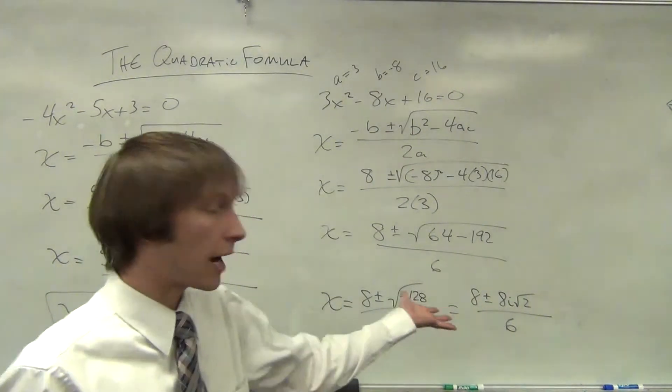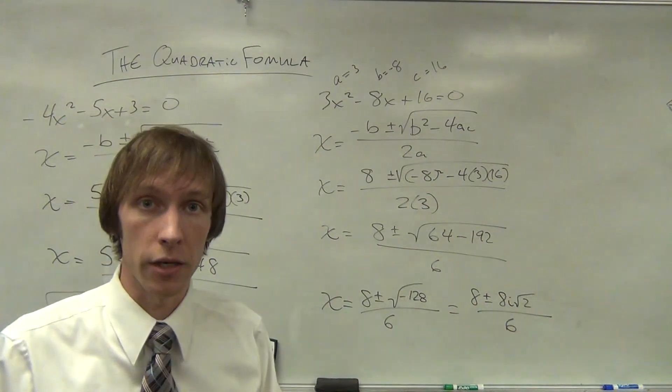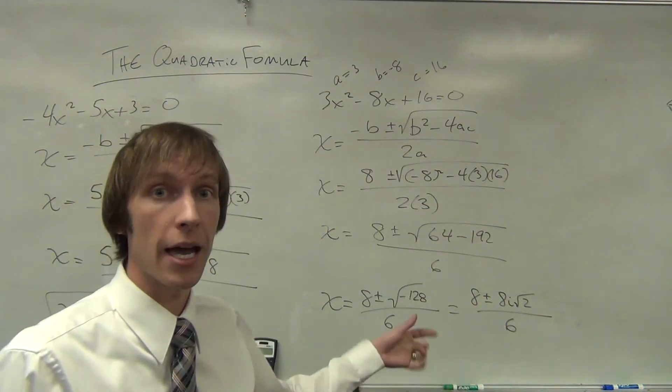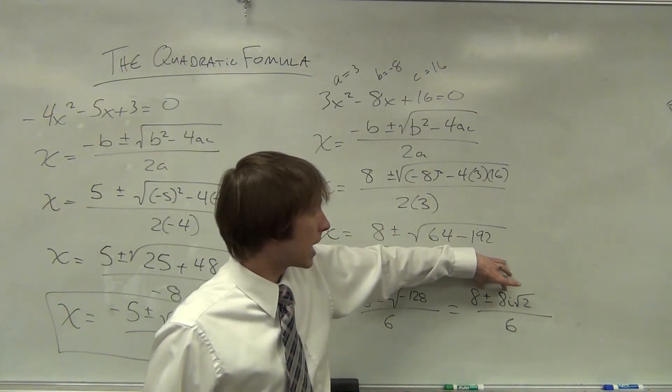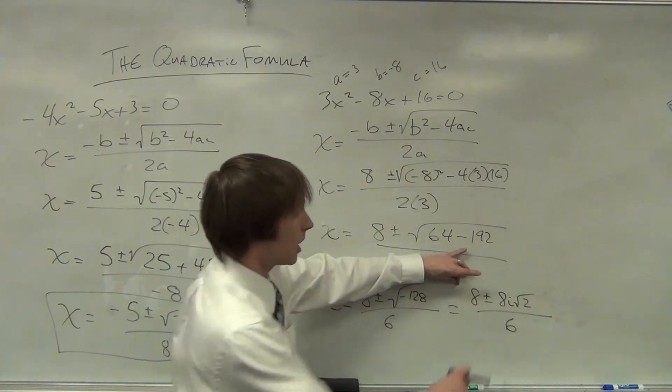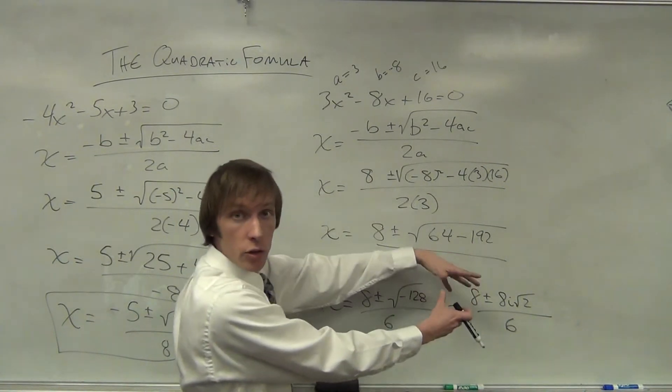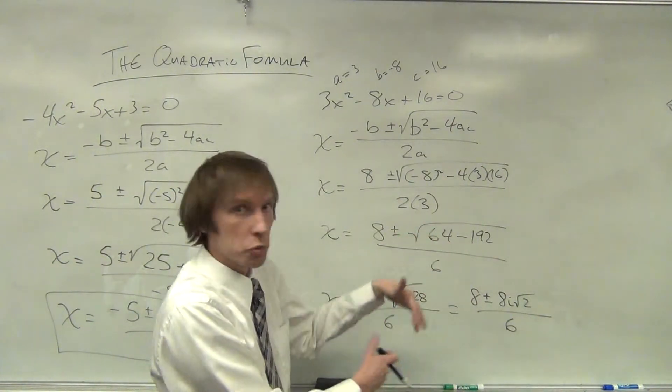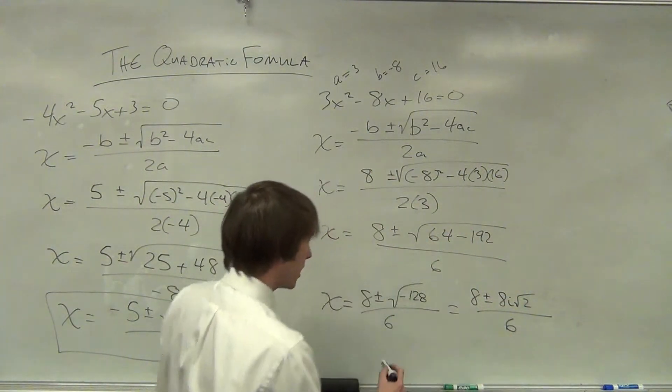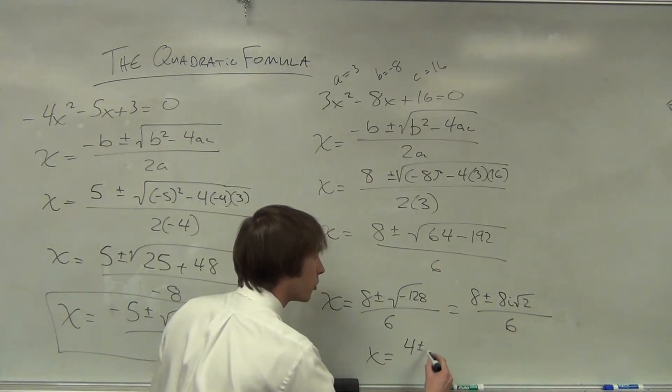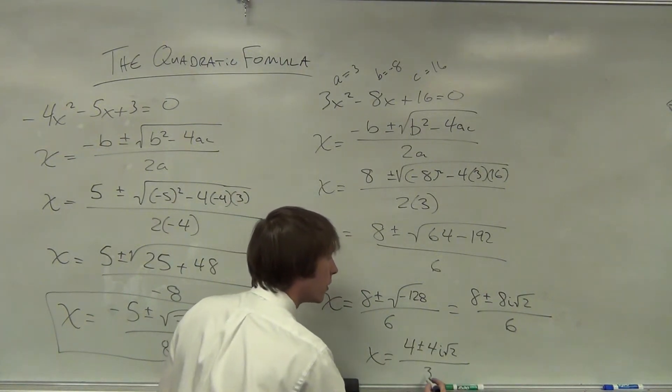Now that looks a little reasonable. Obviously there's an imaginary component there, but we're not done. Here we do have to simplify a fraction. We've got a common factor. If I pull out a 2 from the top and a 2 from the bottom, then those 2s will reduce or will cancel each other out. So if I factor out a 2 over 2, that means that x is equal to 4 ± 4i√2 over 3.